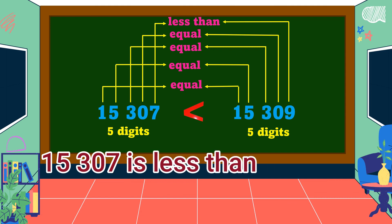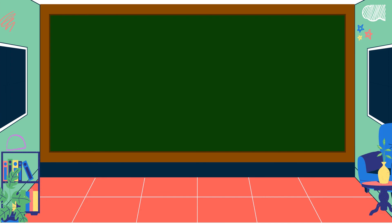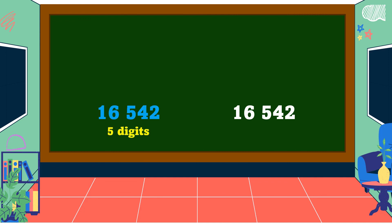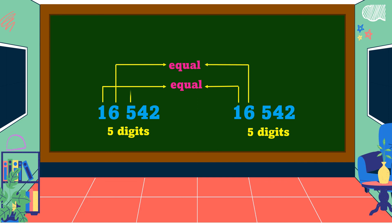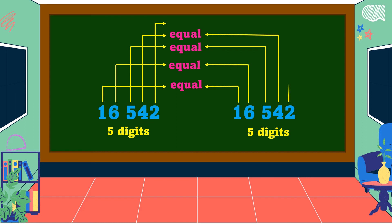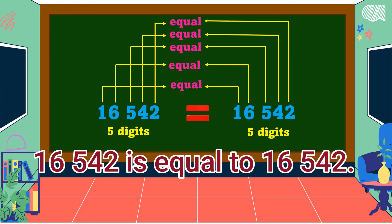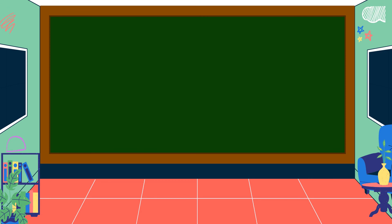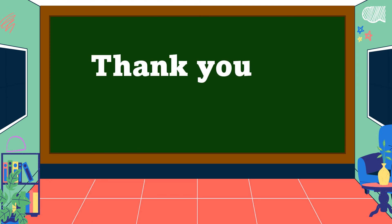Next example: the first number has five digits and the second also has five digits. Comparing from the highest place value: one and one are equal, six and six are equal, five and five are equal, four and four are equal, two and two are equal. Since all digits are equal, the relation symbol is equal to. Therefore, 16,542 is equal to 16,542. I hope you understand our lesson for today. Thank you for watching.